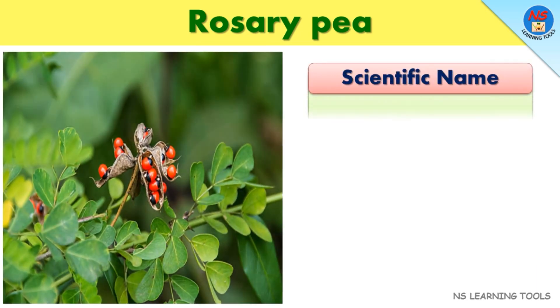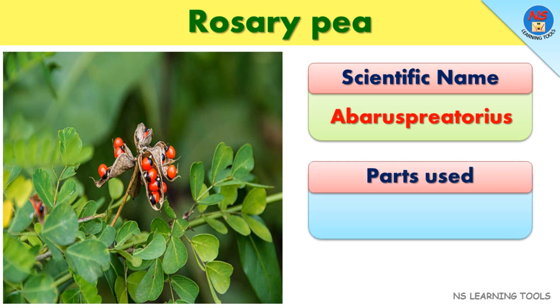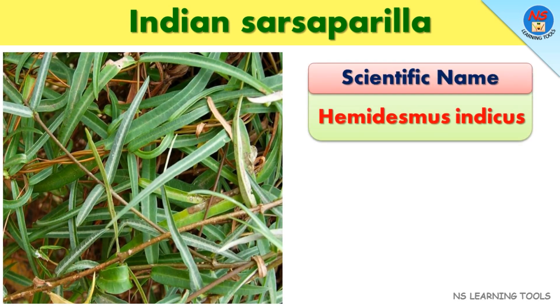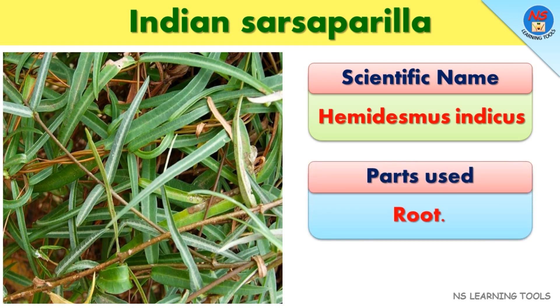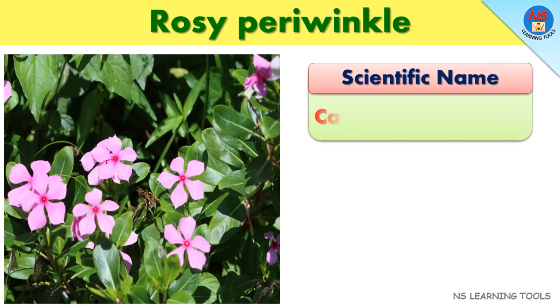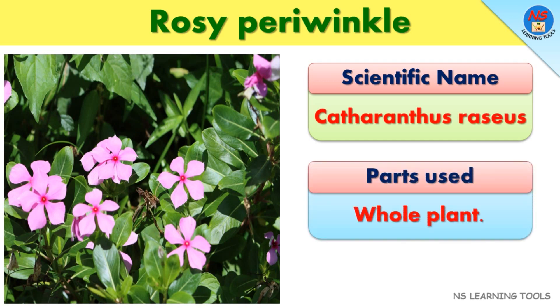Rosary pea. Scientific name: Catheranthus raezius. Parts used: Whole plant.